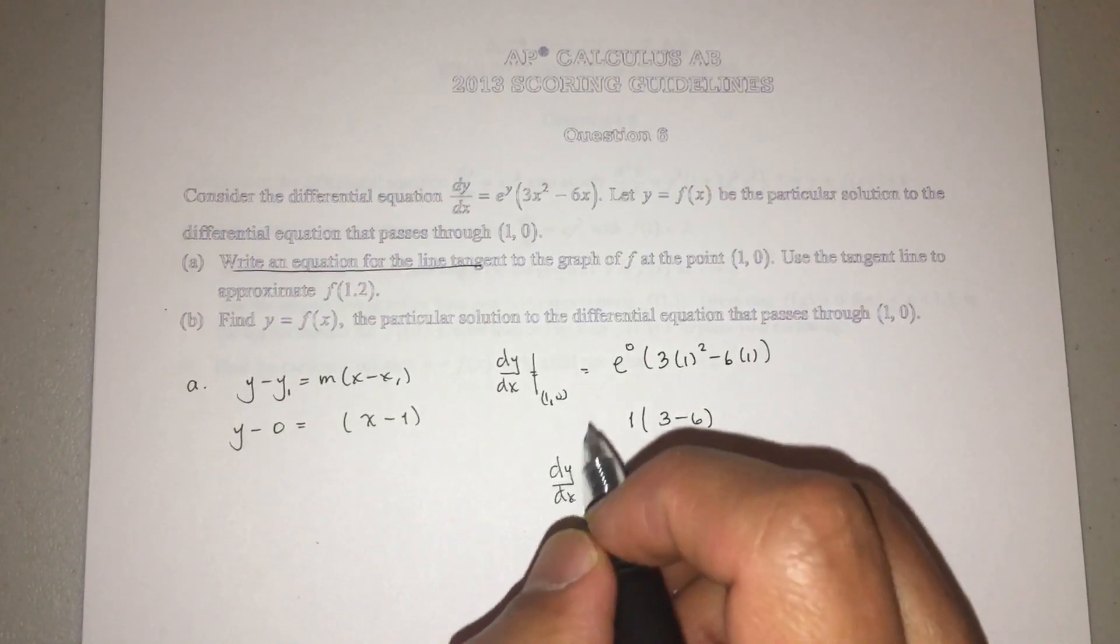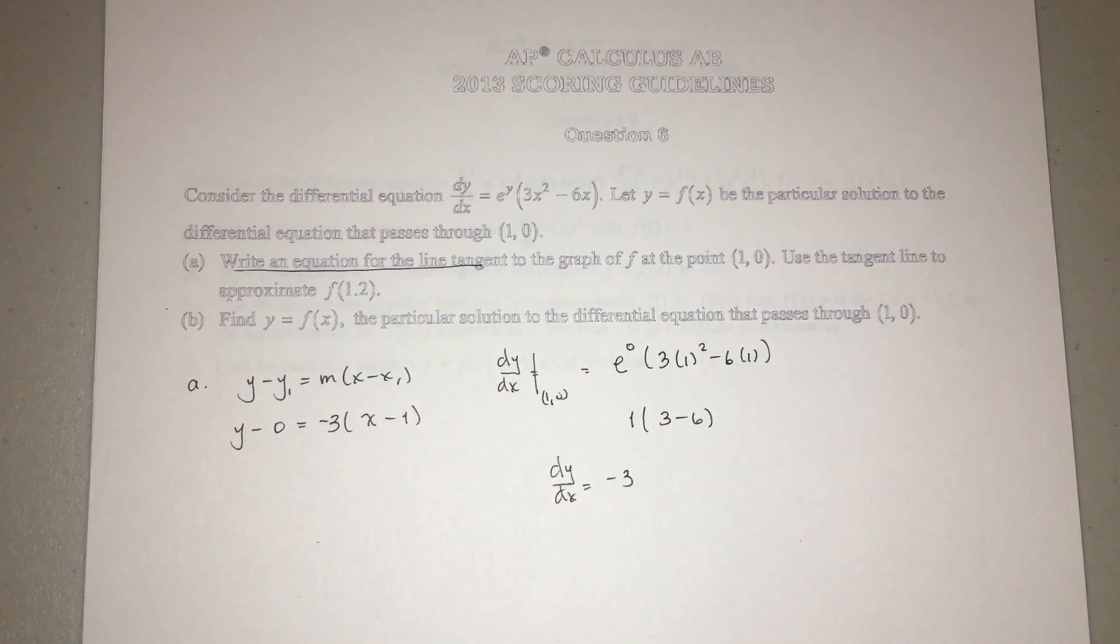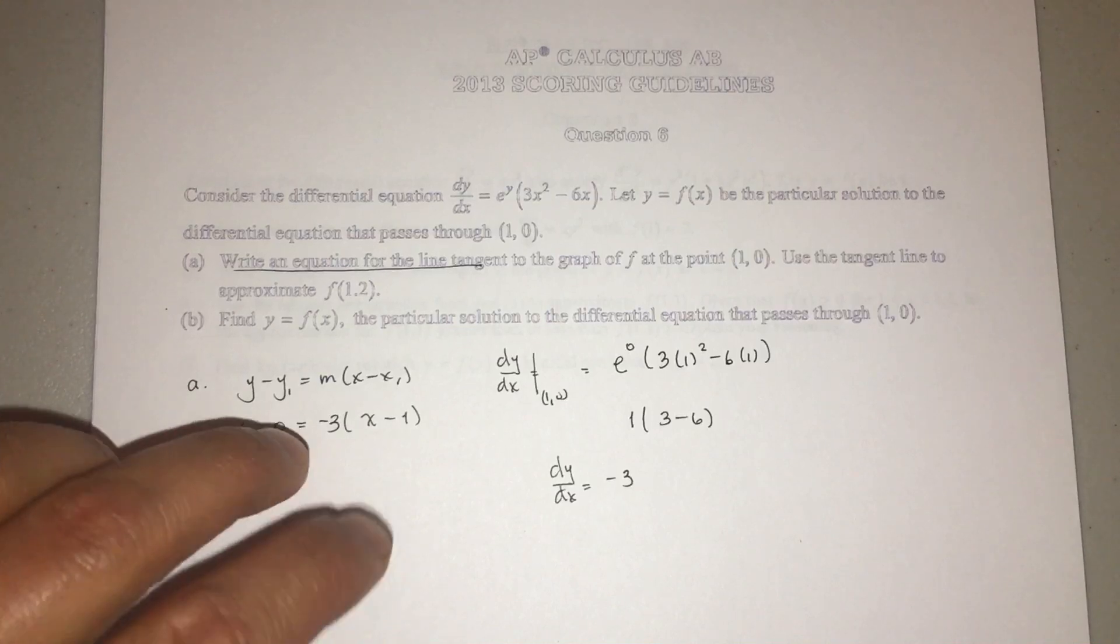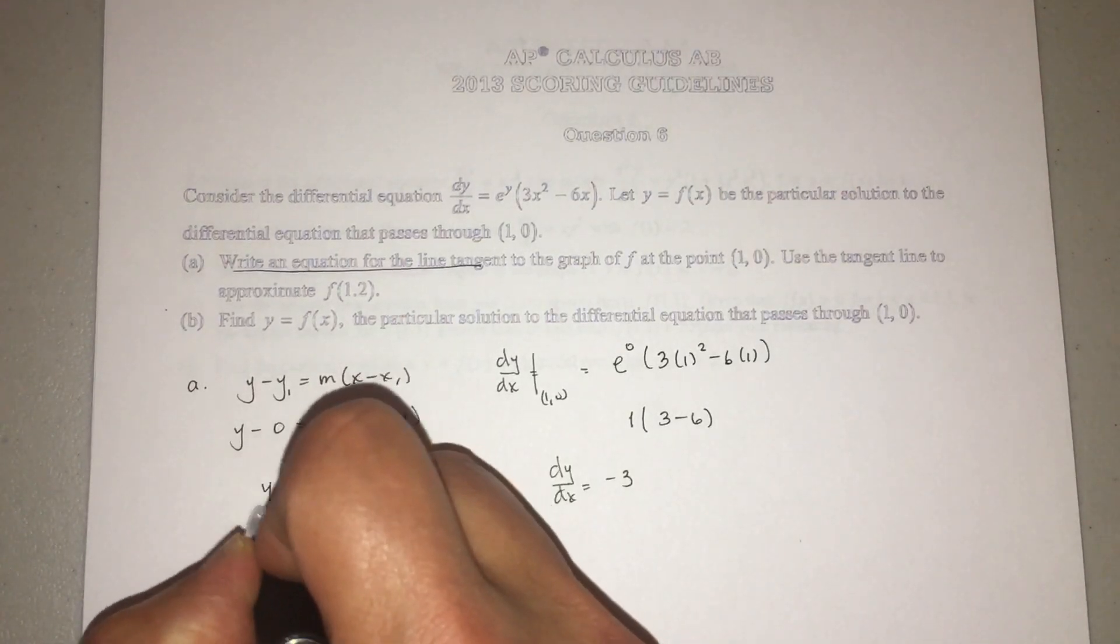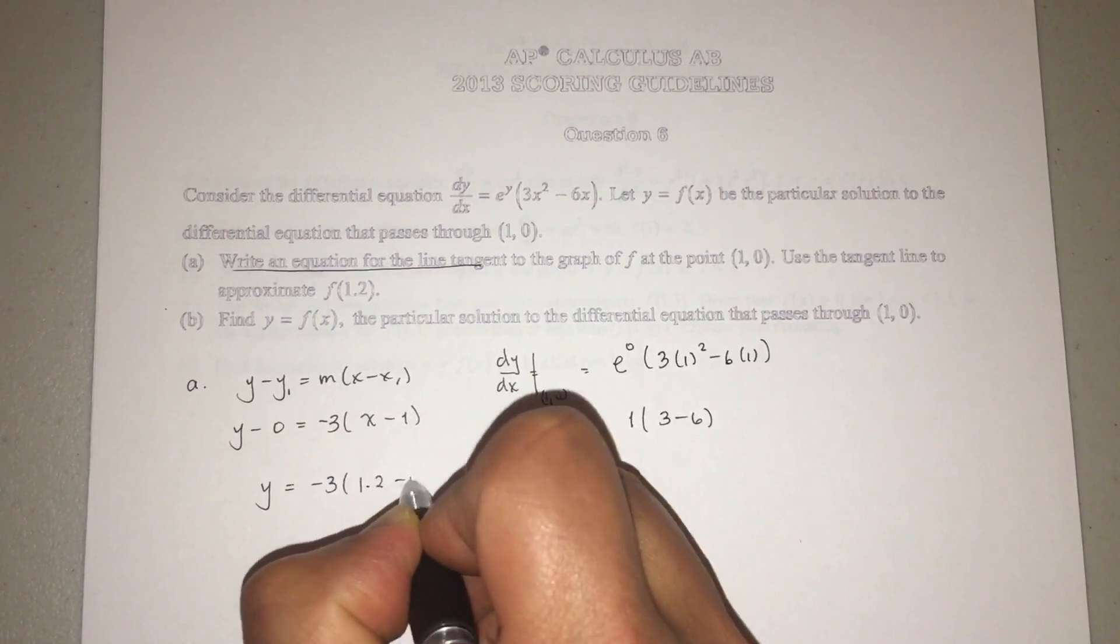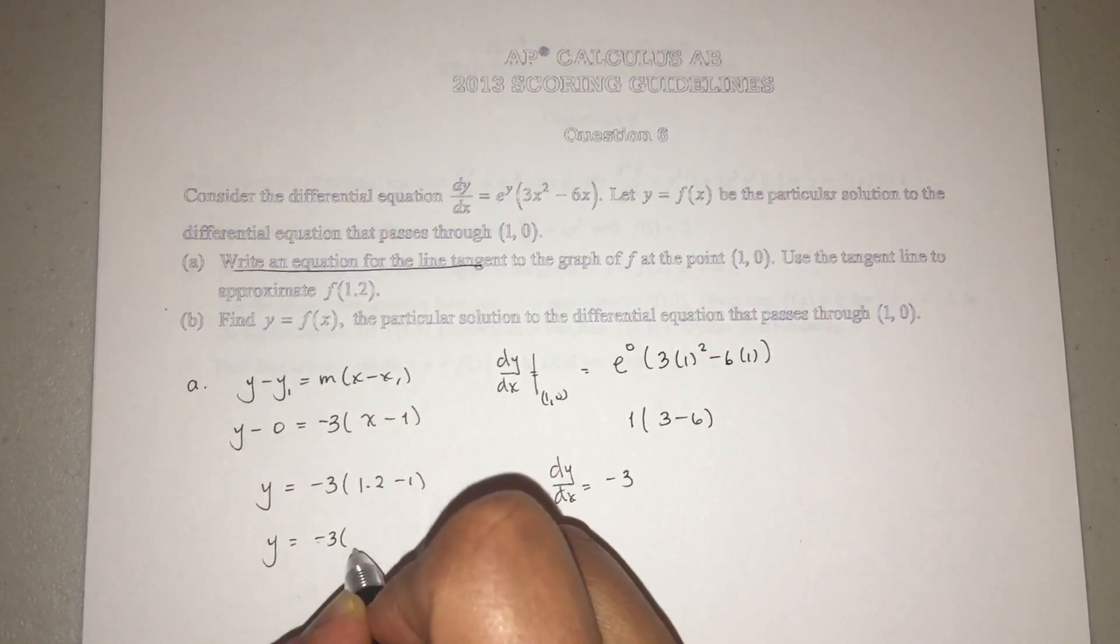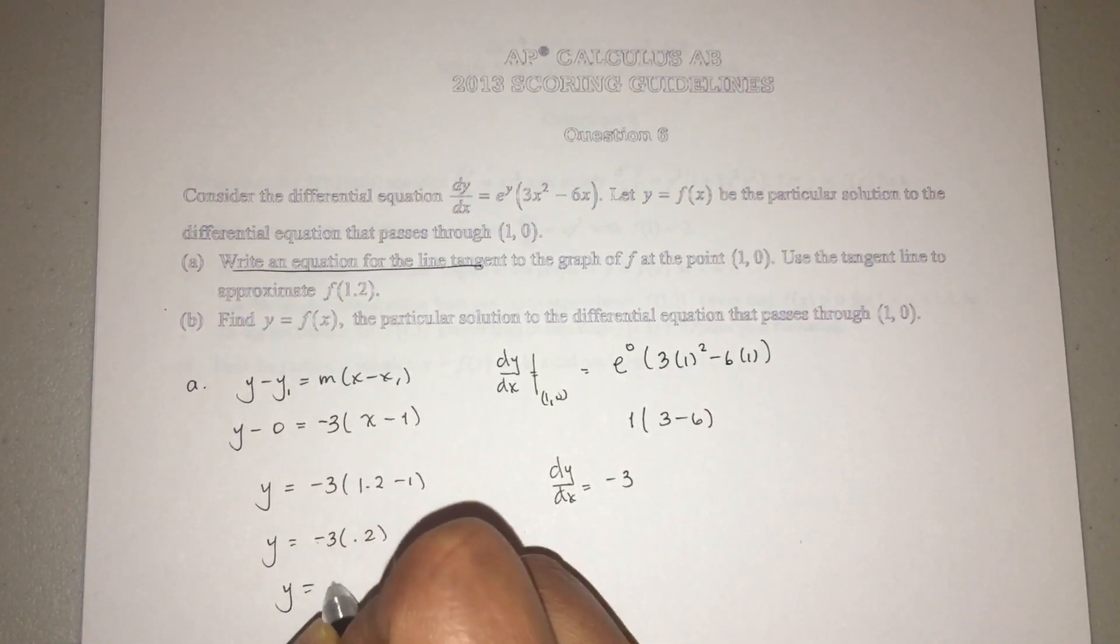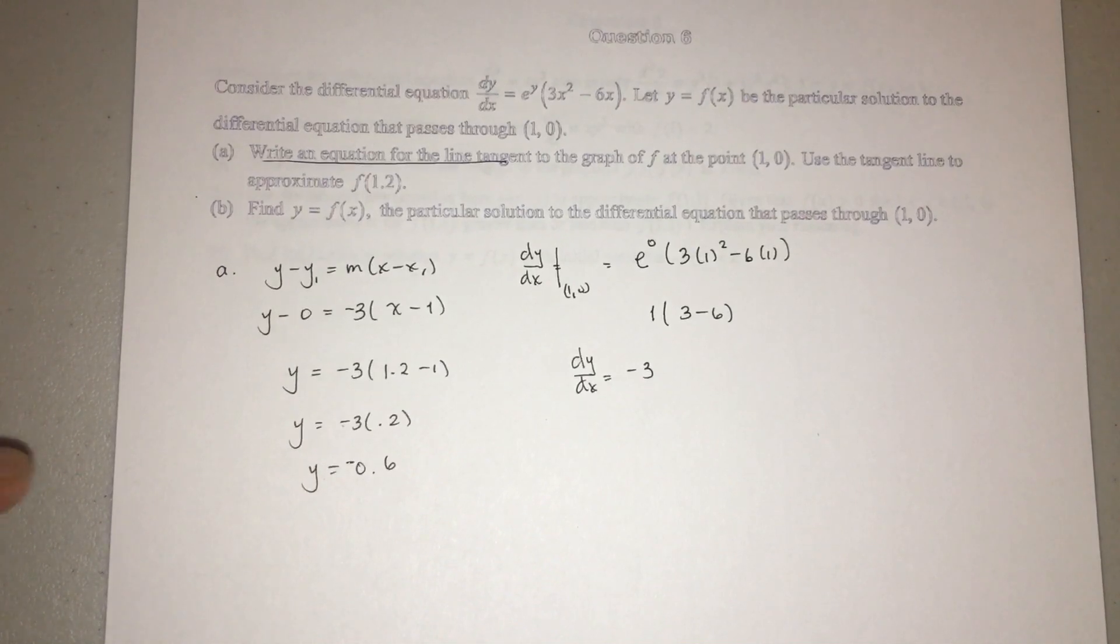And that would be it, guys. And if you did this correctly, this will give you two points. We need one more. We've got to find f(1.2), right? So y = -3(1.2 - 1). 1.2 minus 1 is 0.2. So y = -0.6. And that's it, guys. So that would give you 3 points.